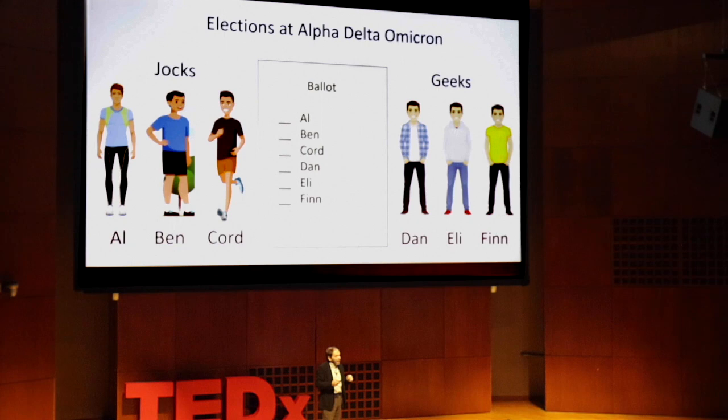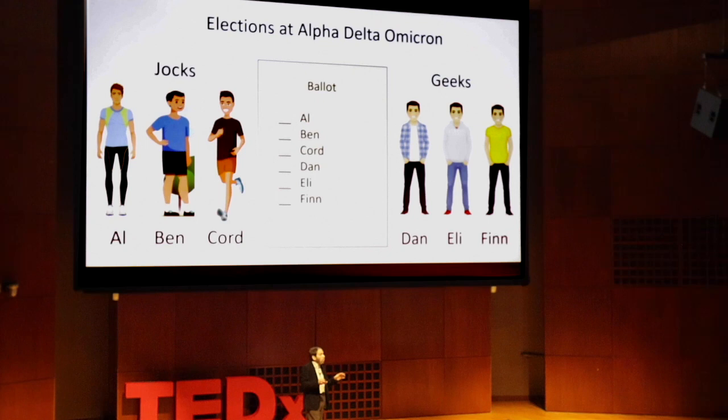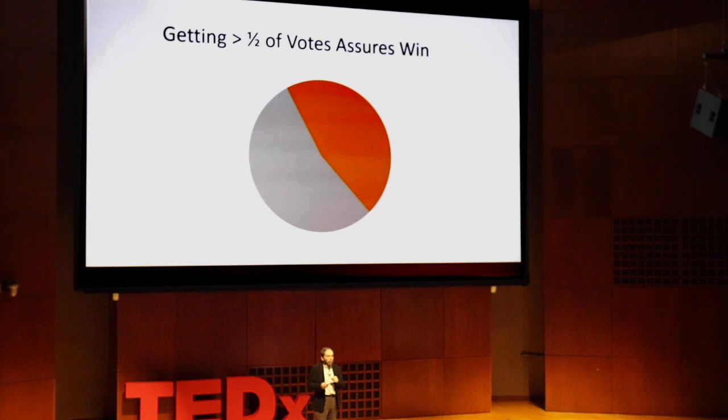The key here is that the winner ended up with more than half of the vote. Now let's turn back to the elections at Alpha Delta Omicron, the original setting where we want to have three winners, and walk through how we can use rank-choice voting to get a fair outcome.